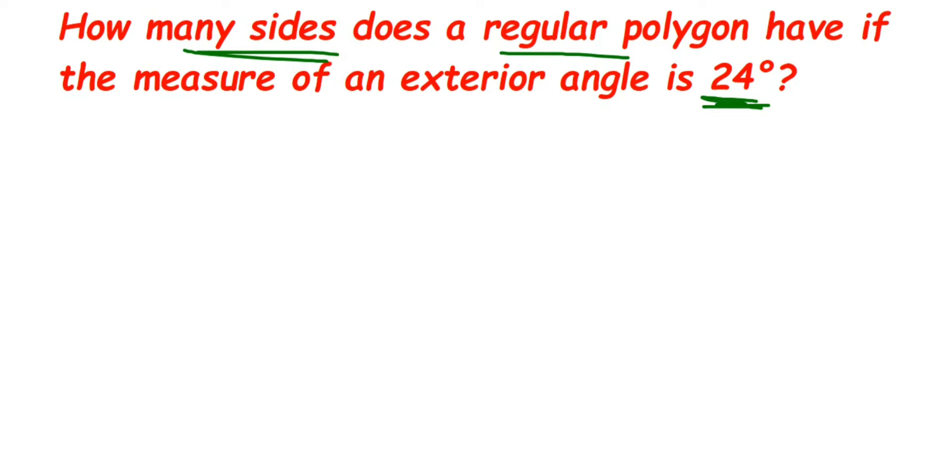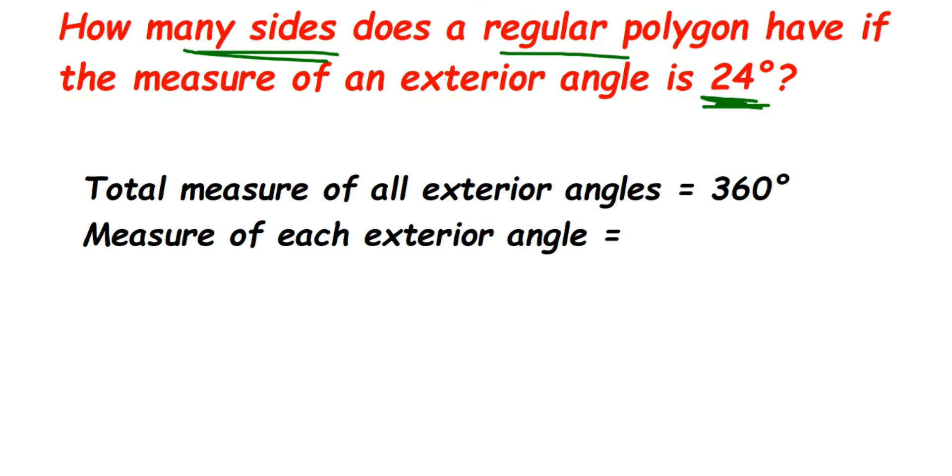Now there is one property that the sum of exterior angles is equal to 360 degrees. Sum of exterior angles of any polygon - whenever you add exterior angles of any polygon, it is always equal to 360 degrees. We're going to use that property to solve this question.